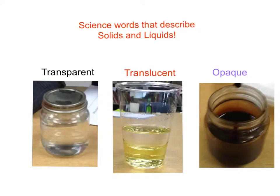Opaque: an object or liquid that lets no light pass through. For example, a table or chocolate sauce.